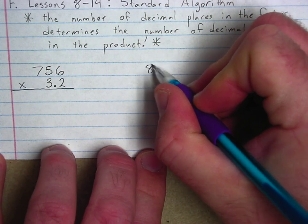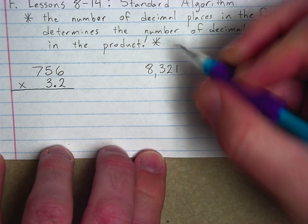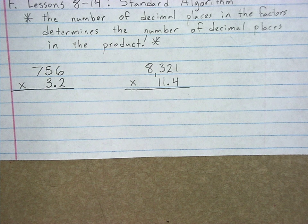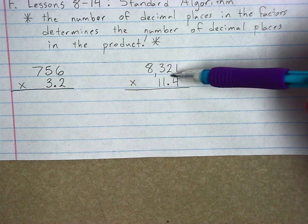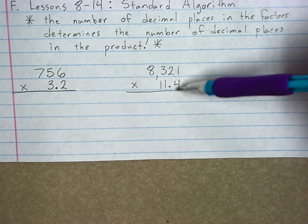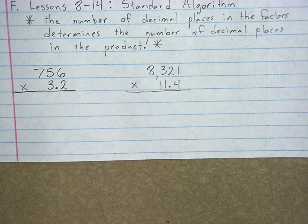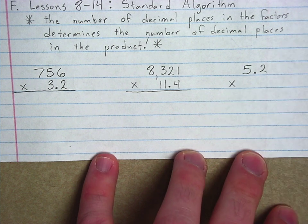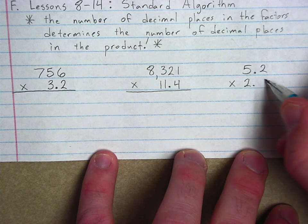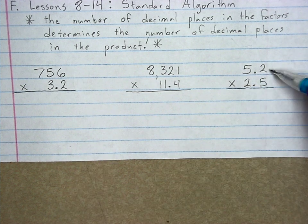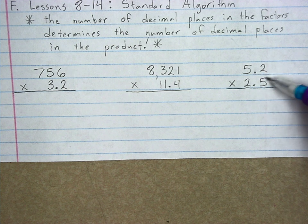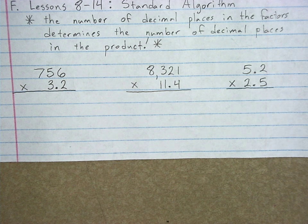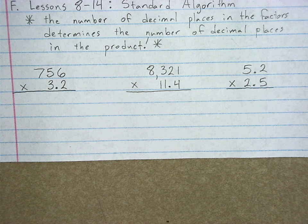Let's do 8,321 times 11.4. Bigger numbers, 8,000 versus 700, 11 instead of 3, but still only one decimal place. For the last one I'll go down to a slightly smaller number, well let's do two slightly smaller numbers, 5.2 times 2.5. However, now we have a decimal in both factors, one, two places total, so my product is going to have one, two decimal places. Go ahead and pause, solve those, I'll give you the answers in just a moment and then we'll take questions in class.